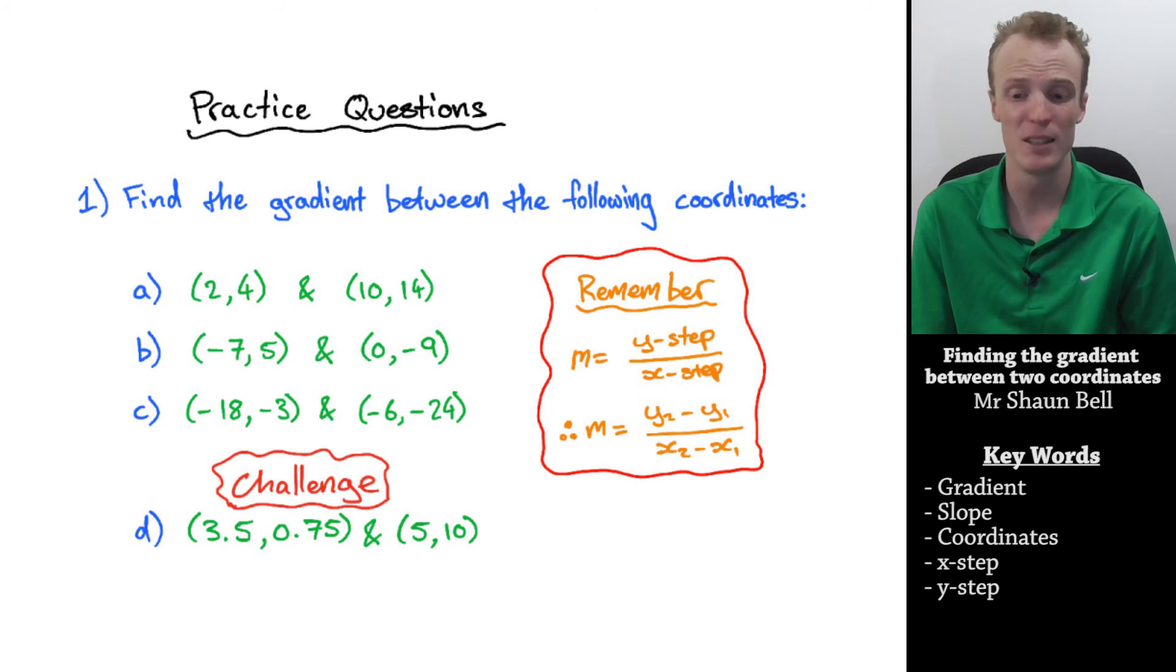Remember that the gradient is the rate of change, which is how much the y value changes for every one step of x. We find this by dividing the y step by the x step, which we can describe as being y2 subtract y1, all divided by x2 subtract x1.